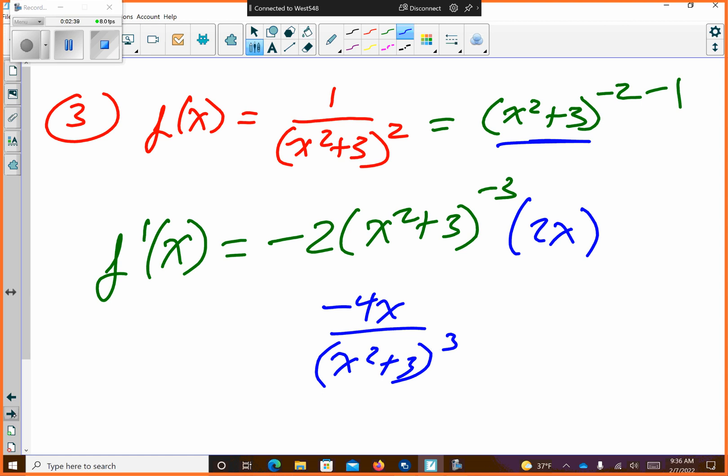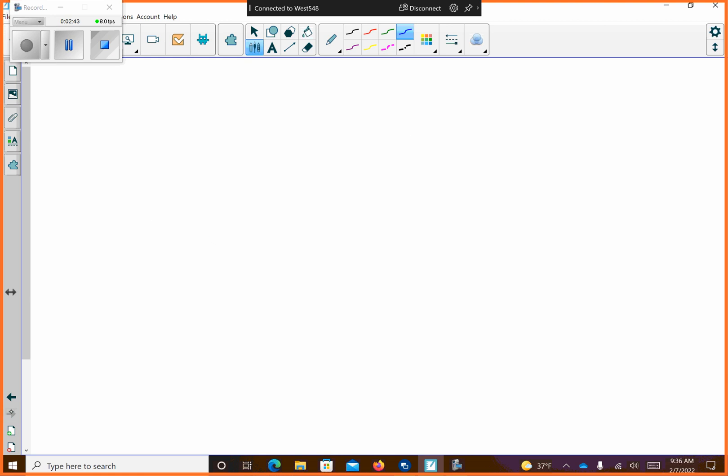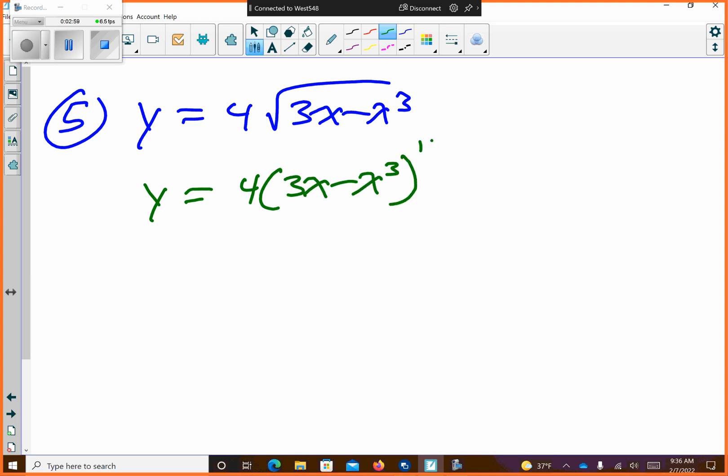All right, number five, can I move on? We good? Number five. We have y equals 4 times the square root of 3x minus x cubed, like this. So I'm going to change this to this. So put it to the one-half power.